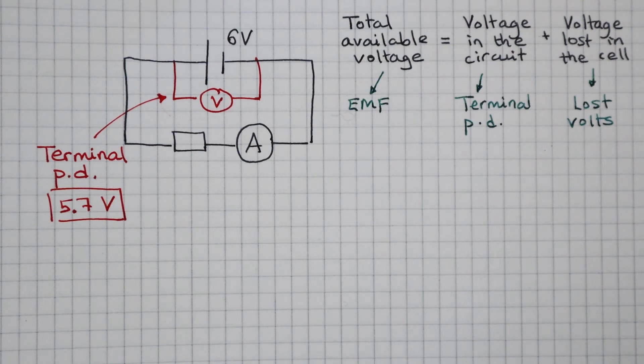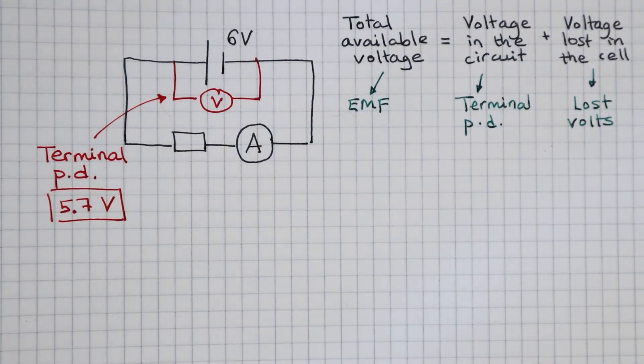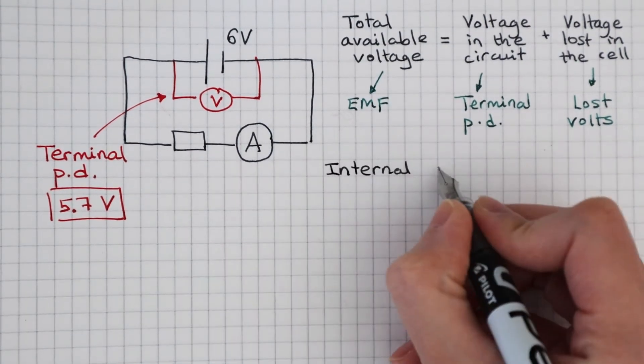But why is there a lost volt in the cell? That's because the cell has an internal resistance.